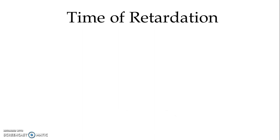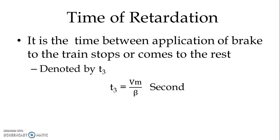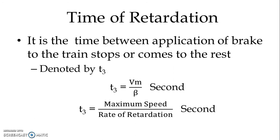Similarly, we have time of retardation. It is the time between the application of the brake and when the train stops or comes to rest. It is denoted by t with suffix 3, i.e., t3. Mathematically, t3 equals the ratio of maximum speed V_M to the rate of retardation beta. This is measured in seconds.